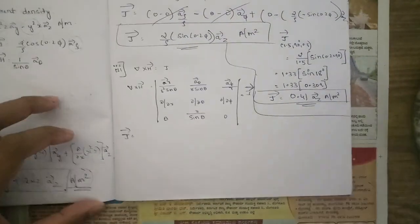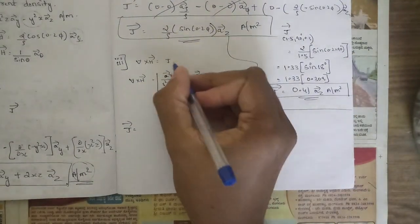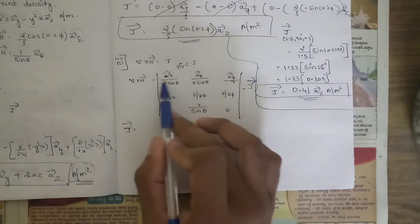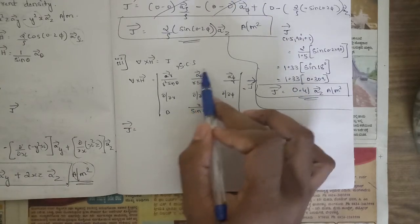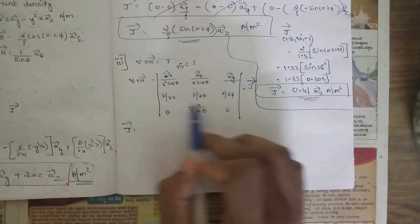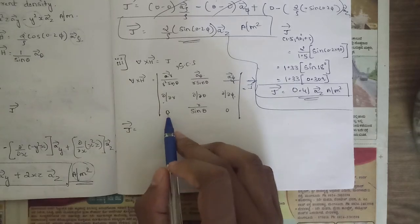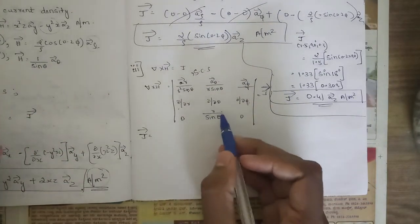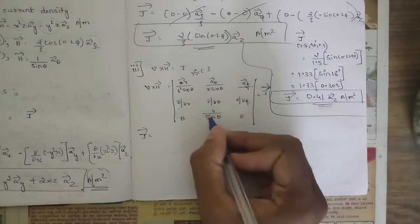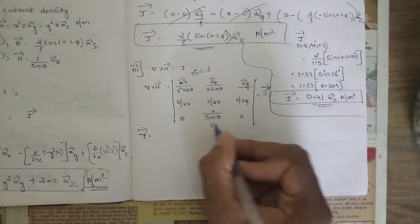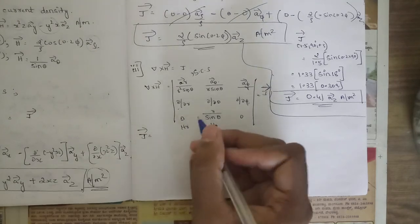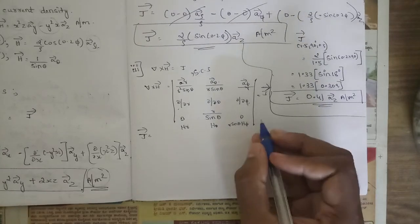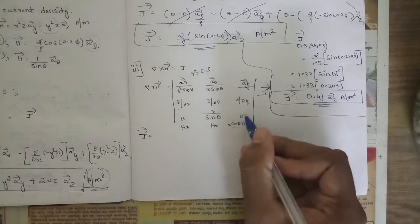For the third sub-question in spherical coordinate system, the determinant for del cross H is: first row a_r/(r²sinθ), a_θ/(r·sinθ), a_φ/r; second row ∂/∂r, ∂/∂θ, ∂/∂φ; third row H_r = 0, r·H_θ = r/sinθ, r·sinθ·H_φ = 0. Since there is no H_φ term, that coefficient is zero.